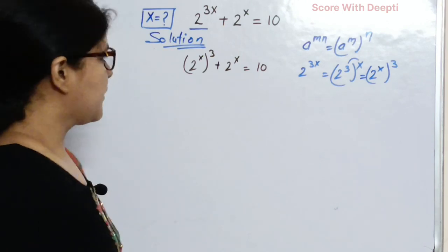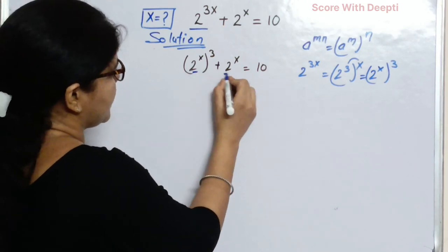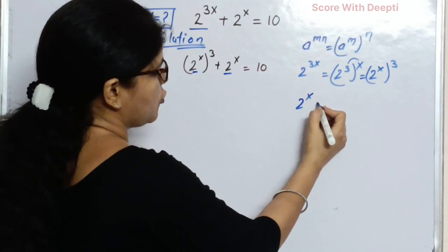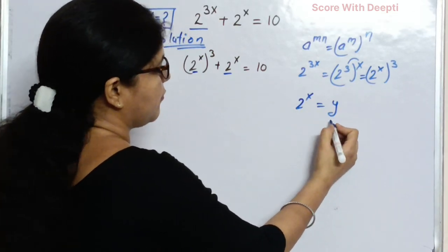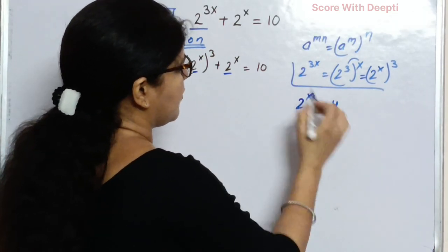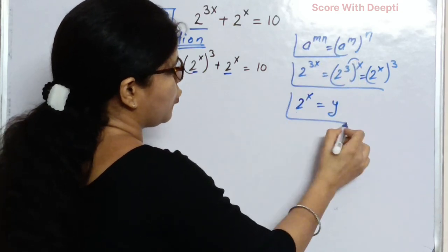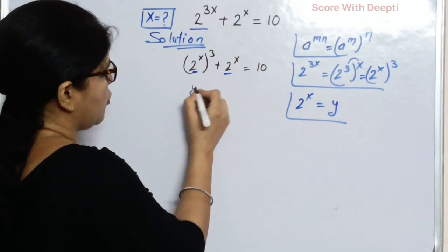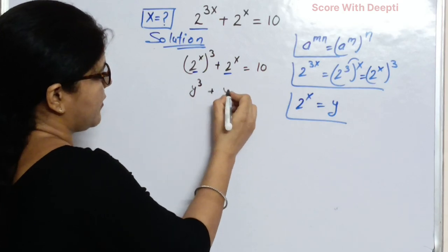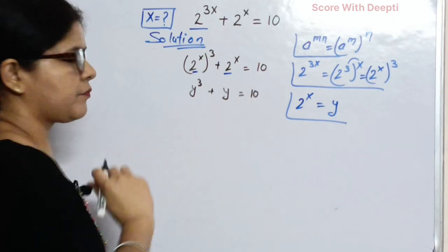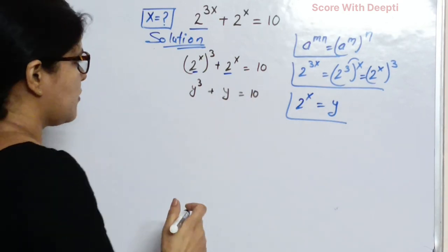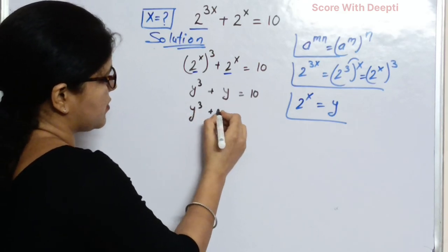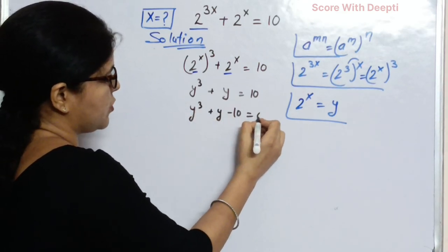Next, we see 2 raised to power x and 2 raised to power x are both the same. So in place of 2 raised to power x, we write y. We write y in place of 2 raised to power x. So we write y cubed plus y equal to 10.